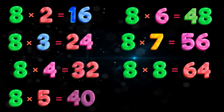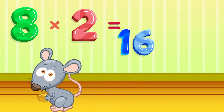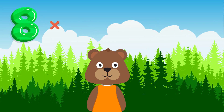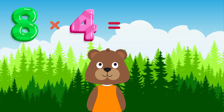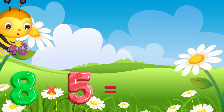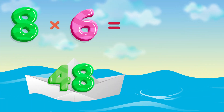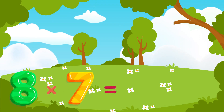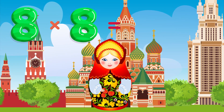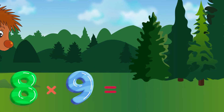Let's sing again. Eight times two is sixteen, eight times three is twenty-four, eight times four is thirty-two, eight times five is forty, eight times six is forty-eight, eight times seven is fifty-six, eight times eight is sixty-four, eight times nine is seventy-two.